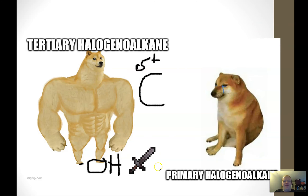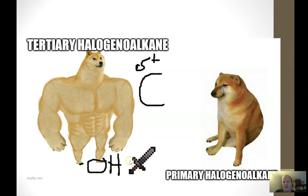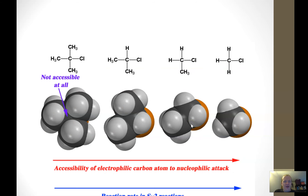Here we have a meme illustrating this: our hydroxide nucleophile wants to attack the partially positive carbon, but the beefy tertiary halogenoalkane pretty much completely prevents this from happening, while the wimpy primary halogenoalkane allows the nucleophile to go right in.